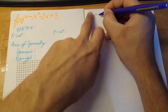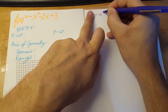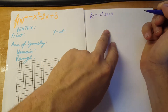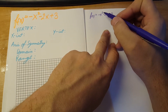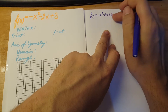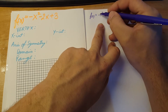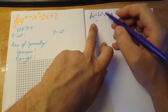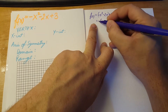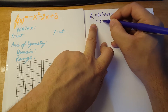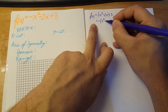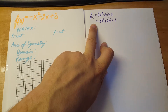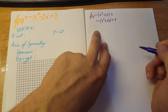So f(x) equals — I'm just going to write this over here. Now we're going to separate the first two terms from the three, so I'm going to put a parenthesis around them. Let's factor out the negative, and in parenthesis we're going to have x squared plus 2x, with plus 3 on the end. That doesn't change.